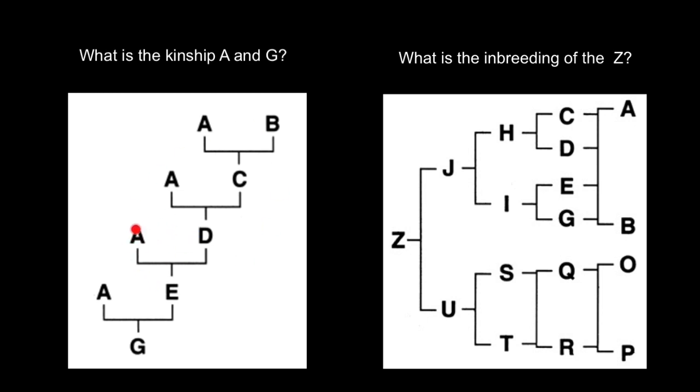As you see, again, parent A and D produce individual E. And again, we have here a mating with parent A, and they produce individual G. Now we have to calculate kinship of the individual A and G. Let's start analyzing this pedigree. By the way, we call this backcross when we cross parent with its offspring in each generation.